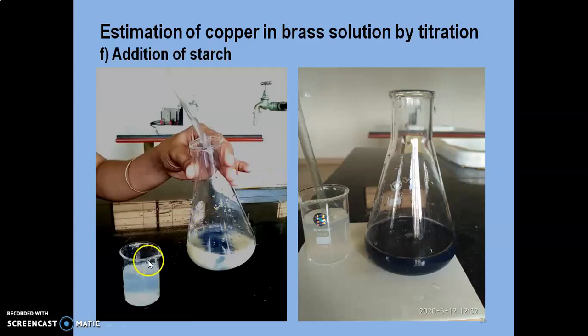To the pale yellow solution, or the pale yellow mixture, we need to add the starch. Upon the addition of starch, we will end up getting starch iodide complex. And iodine will be in its least concentration.